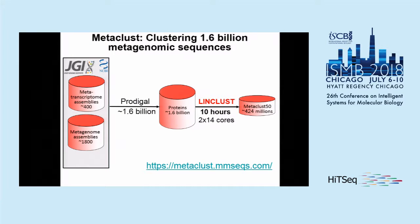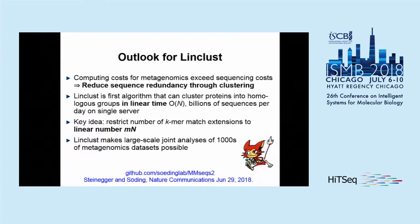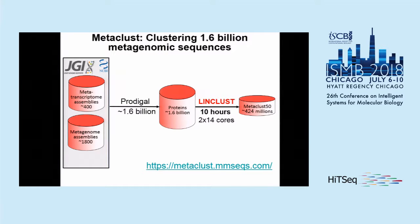To apply this to a real-world example, we created a database called MetaClust. We extracted proteins from metatranscriptomes and metagenomic assemblies, ending up with 1.6 billion protein sequences. We then used LinClust to cluster them down to 424 million sequences, and it took us 10 hours on 28 cores. The data is freely available at metaclust.mmseqs.com.